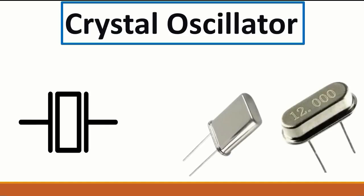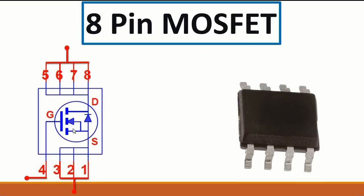Another component is the 8-pin MOSFET, which we have seen before. Looking at its schematic: pins 1, 2, and 3 are the source; pin 4 is the drain; and pins 5, 6, 7, and 8 are also for drain. Pin 8 is the gate.